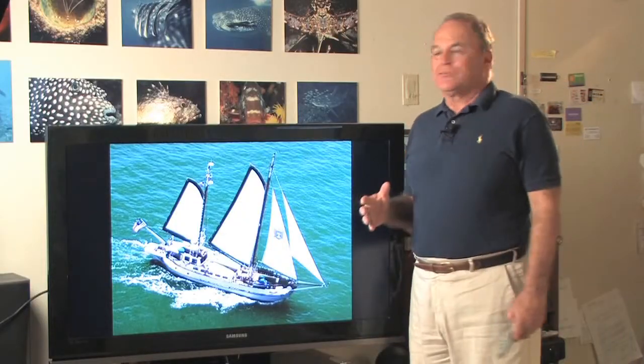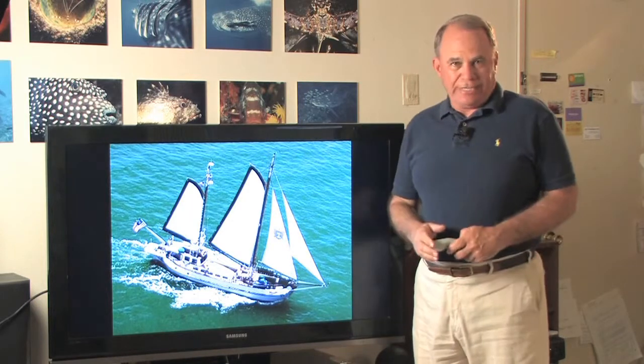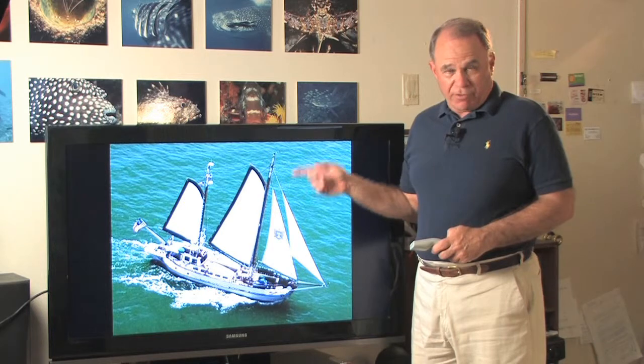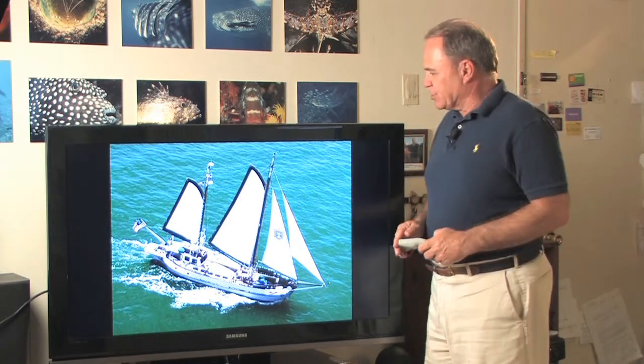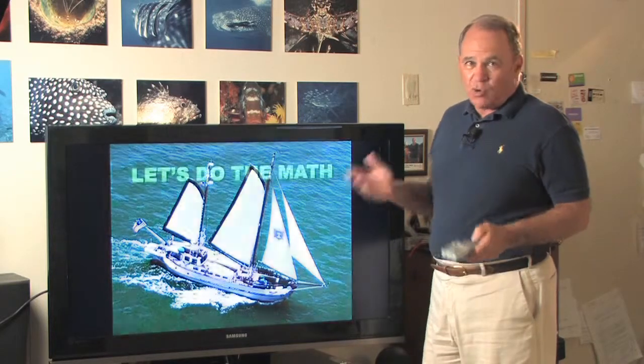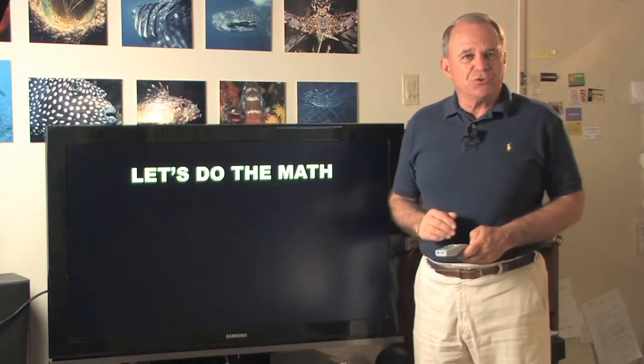Let me show you mathematically how this works. Allow me to introduce you to the Sir Martin II. It is a 100-ton vessel. It's for sale, by the way, for a million bucks U.S., in case you're interested. But based on Archimedes' principle, we can prove that this thing floats. All we have to do is do the math.